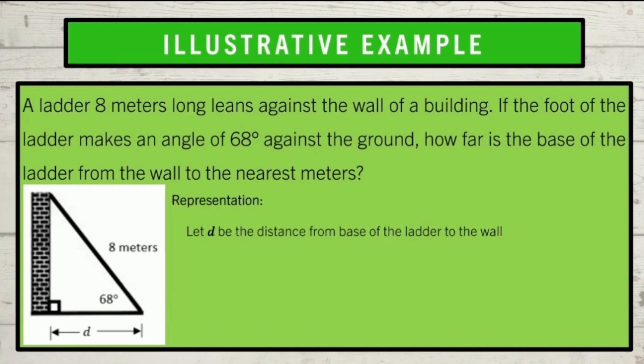For the representation, let d be the distance of the base of the ladder from the wall. From the illustration, based on the given values, which among the three primary trigonometric ratios are we going to use? Perfect! Since we have the adjacent side and the hypotenuse, we can use the cosine ratio. What is the equation or formula to be used? Very good! The formula that we are going to use to solve for the distance from the base of the ladder to the wall is cosine theta which is equal to adjacent side over the hypotenuse.